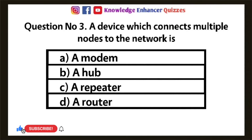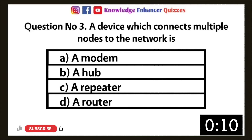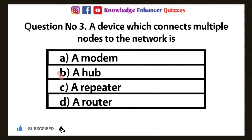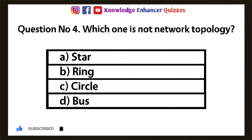Question 3: A device which connects multiple nodes to the network — Option A: A modem, Option B: A hub, Option C: A repeater, Option D: A router. Option B is the right answer.